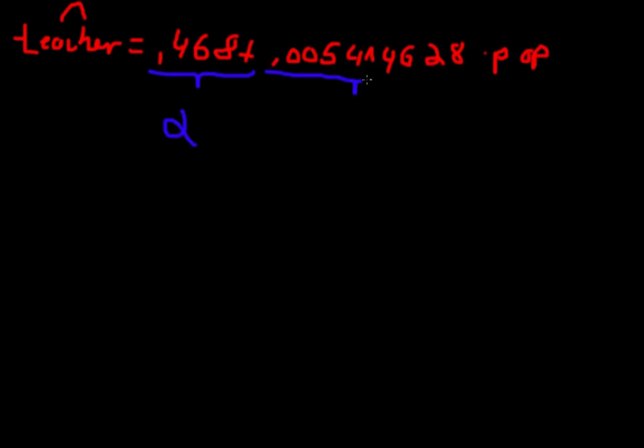This number right here, 0.468, this is our constant alpha. And this huge number over here, this is the beta-one or the beta coefficient for our independent variable pop. This is the coefficient for the population. We already know how to calculate the estimated number of teachers for a given quantity of population.